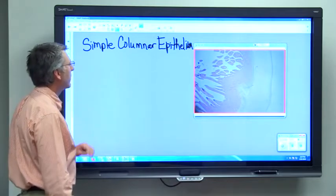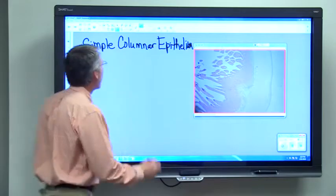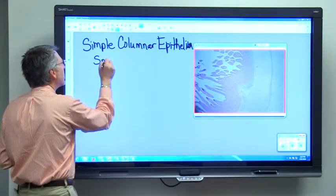To show you simple columnar epithelium, we want to look at a micrograph of the small intestine.